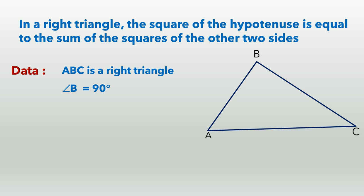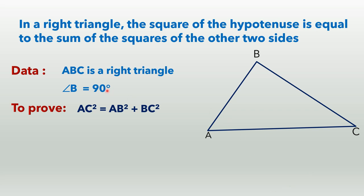What do we have to prove? Observe, children — in any right-angled triangle, the biggest side, or the side opposite to the right angle, is called the hypotenuse, and the other two sides are adjacent sides. Here, AC is the hypotenuse and AB and BC are adjacent sides. We have to prove that the square on the hypotenuse is equal to the sum of the squares on the other two sides, that is, AC² = AB² + BC².